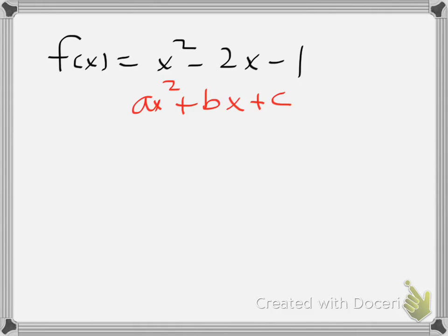So if I'm going to find the domain and range, the domain for a quadratic function, where in this case our a is 1, b is negative 2, and c is negative 1, is automatically going to be all real numbers.